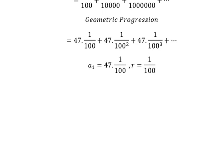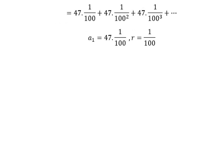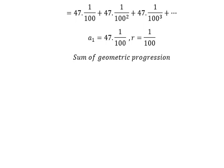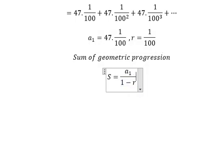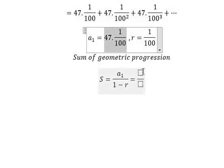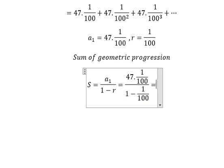So if we want to find the ratio of integers, we need to find the sum of the geometric series. The formula to find the sum is a1 over 1 minus r. We have a1 as this first term, and we have 1 minus 1 over 100. We then calculate this number.